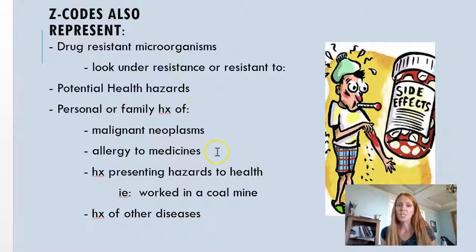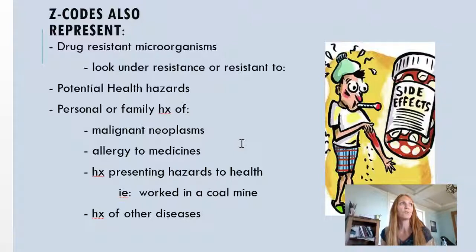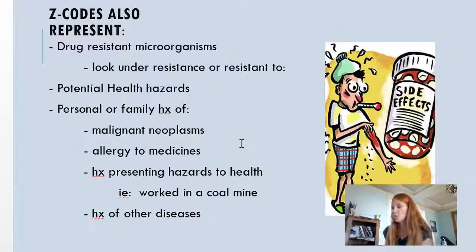We use Z codes to show if a drug is resistant — we've all heard of MRSA, so if you're coding resistant to a microorganism, you'd look under resistant. There are also Z codes for potential health hazards, like if somebody was exposed to anthrax at work, exposed to secondhand smoke, or exposed to tuberculosis — any kind of exposure.